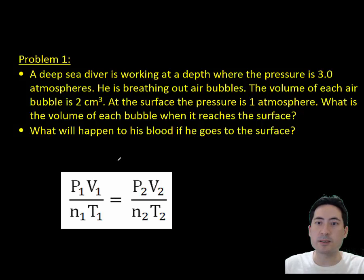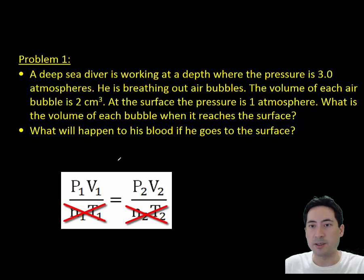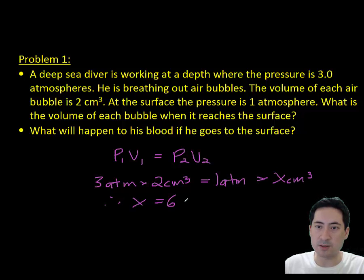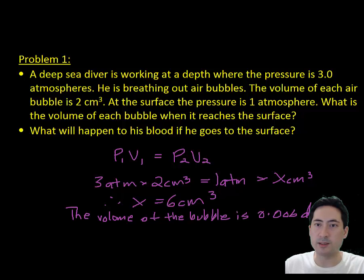The first problem is a simple pressure volume problem. You use the combination of the ideal gas law to get P₁V₁ equals P₂V₂. You can sub those in and you should realize that because the pressure is decreasing, the volume should increase. You go from 2 centimeters cubed to 6 centimeters cubed. The volume of the bubble is getting bigger, which could possibly cause death and various other blockages in your blood system called the bends.